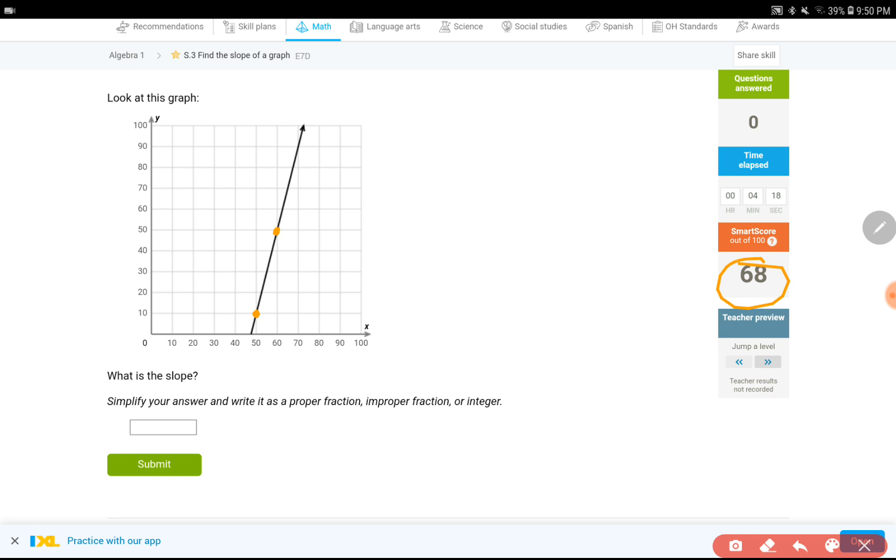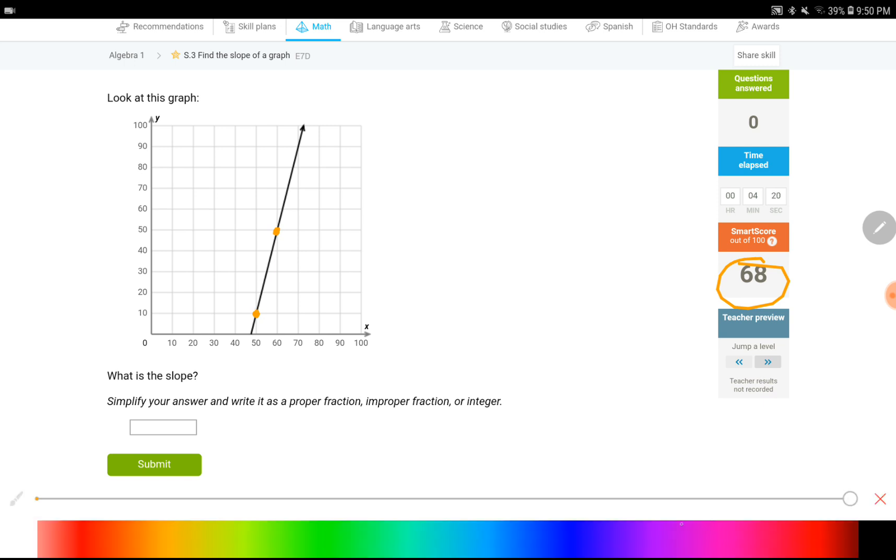Remember, I do rise over run. Count the rise. Let me change this color. It is, this one goes by 10s again. So it's 10, 20, 30, and 40. It's up. That's why it is positive 40. And then this right here from this point to the other orange point, it's right 10. Right is positive as well. 40 over 10 is either 4 over 1 or just a 4.